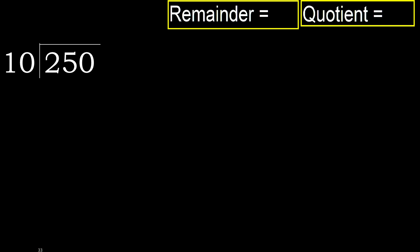250 divided by 10. 2 is less, therefore next. 25 is not less, therefore with 25. 10 multiplied by which number is nearest to 25?